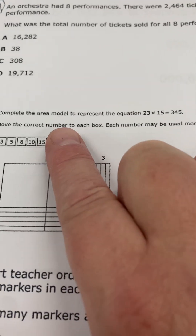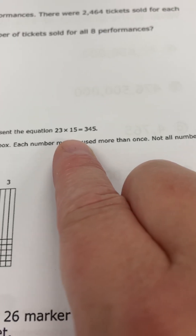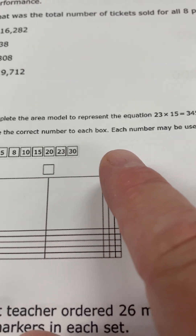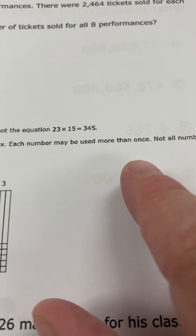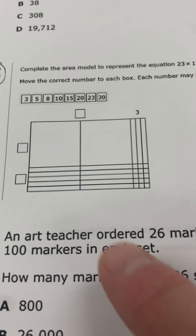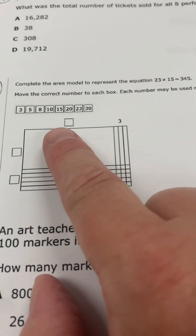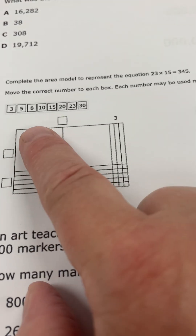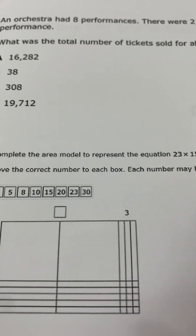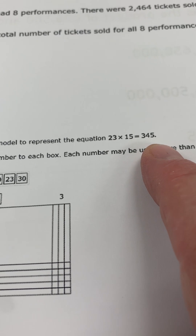Question number three says: complete the area model to represent the equation 23 times 15 equals 345. Move the correct number to each box. Each number may be used more than once. Not all numbers may be used. Here are all the numbers they give you to choose from. You're going to place the correct numbers in those three boxes, from these number choices, to complete the area model representing 23 times 15 equals 345.